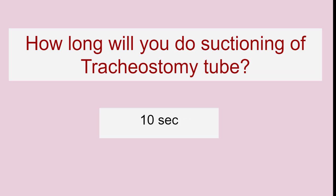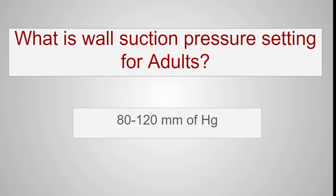How long will you do suctioning of a tracheostomy tube? 10 seconds. The suctioning of a tracheostomy tube cannot be done for more than 10 seconds, and suction should be applied while withdrawing the catheter. What is the valve suction pressure setting for adults? 80 to 120 mmHg.